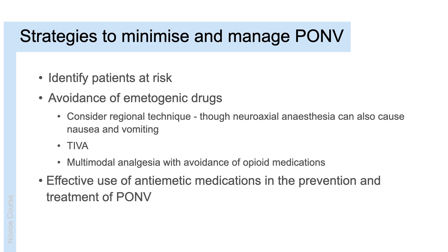So how do we minimise the risk and manage post-operative nausea and vomiting when it does occur in our patients? We've already spoken about identifying the patients that are most at risk, which is the first step. Next, we can consider the avoidance of emetogenic drugs. This could include considering the use of a regional technique as opposed to a general anaesthetic, though we need to note that neuroaxial anaesthesia — so spinal and epidural — can also cause nausea and vomiting. Total intravenous anaesthesia is an option in order to avoid the volatile anaesthetic agents, as we know these are key culprits in causing post-operative nausea and vomiting.